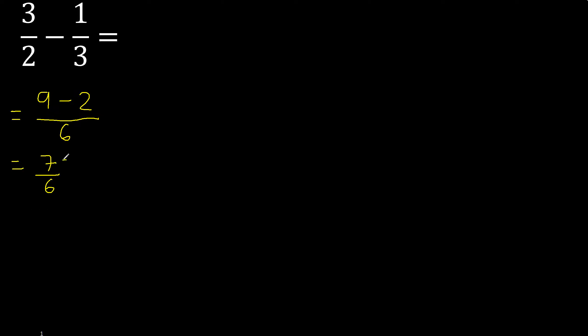Here, 7 is greater, therefore mixed fraction. 6 — 6 multiplied by which number is nearest to 7 but not greater? 6 multiplied by 2 is 12, which is greater. Multiply by 1: 6 multiplied by 1 is 6, which is not greater. 7 minus 6 is 1. Mixed fraction — therefore like this, or like this.